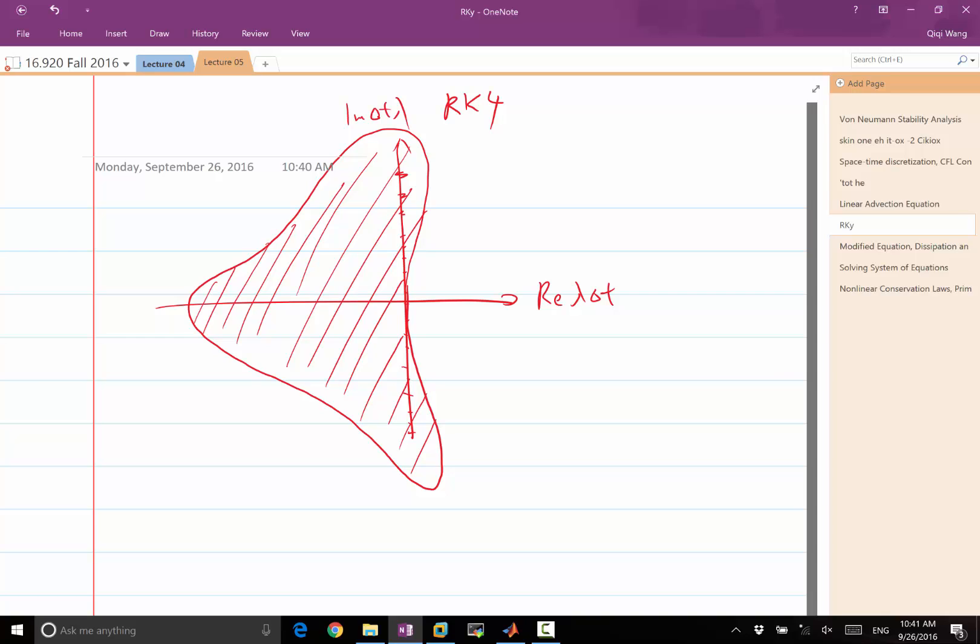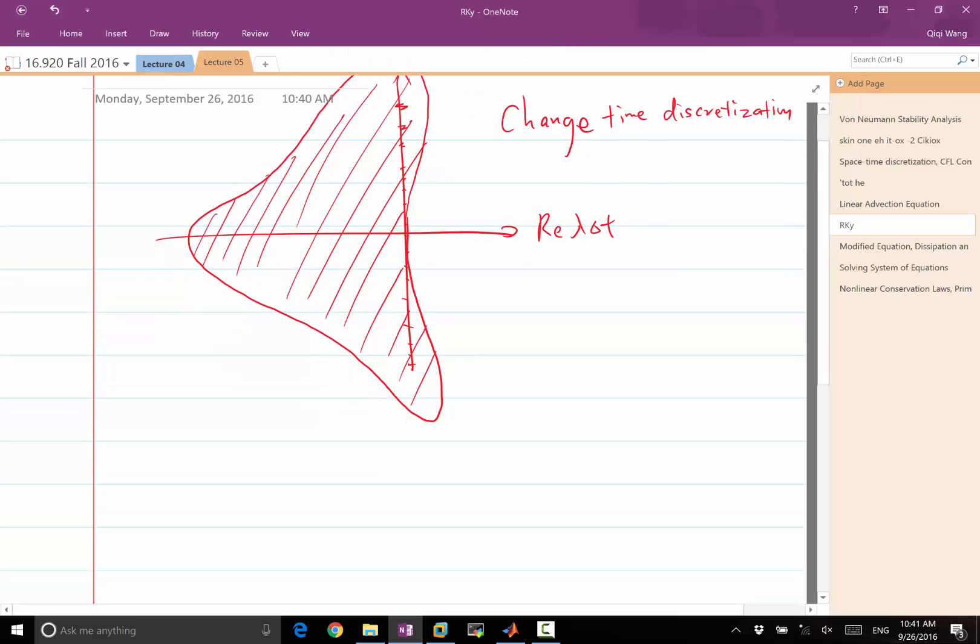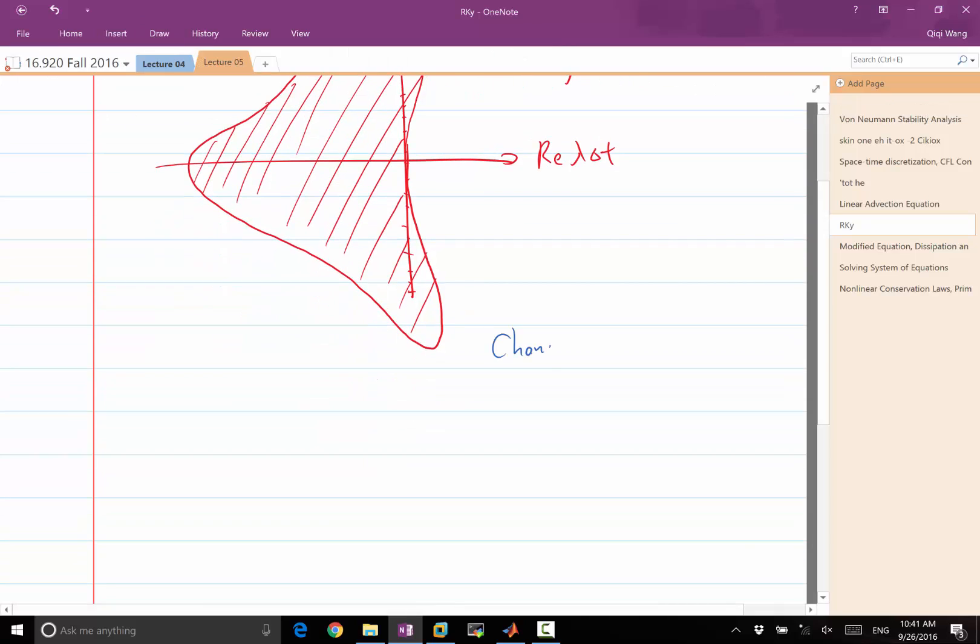So one solution is just to use RK4 to solve the equation. It'll be slightly more lines of code you need to write, but no problem. Or just use ODE45. You'll be okay. So that is one solution. Change time discretization. Another potential solution is change spatial discretization.